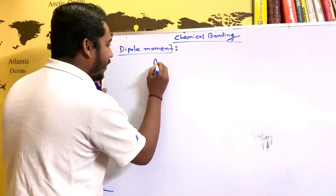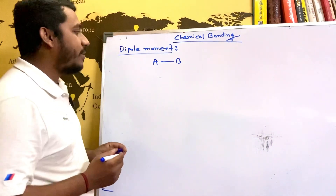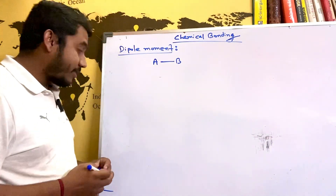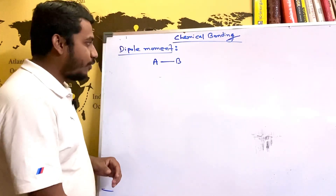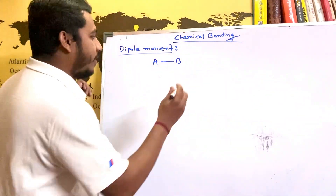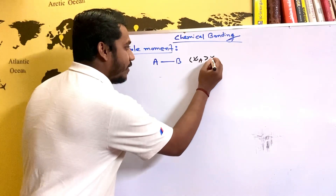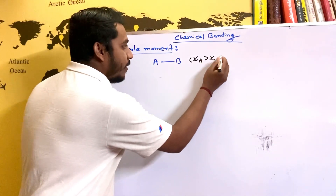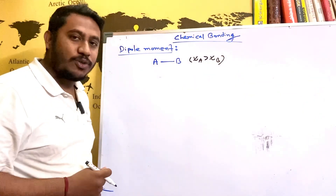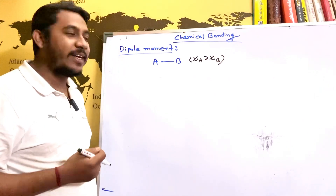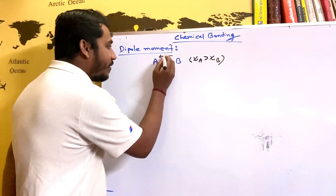The point we are talking about is A-B. A-B is a covalent compound, and for A-B, the electronegativity of A is greater than the electronegativity of B. This means that A's electronegativity will attract the bonded electrons.